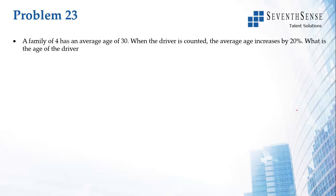Problem 23: A family of four has an average age of 30. First thing you do is calculate the total age. Four people with average age of 30 means the total age is 120. When the driver is counted, the average age increases by 20 percent.